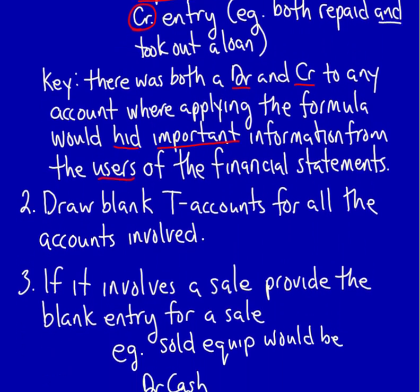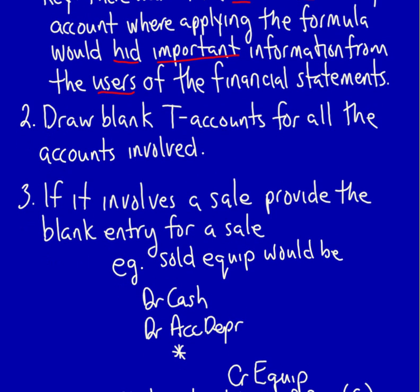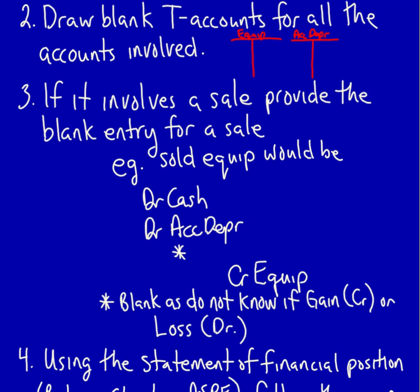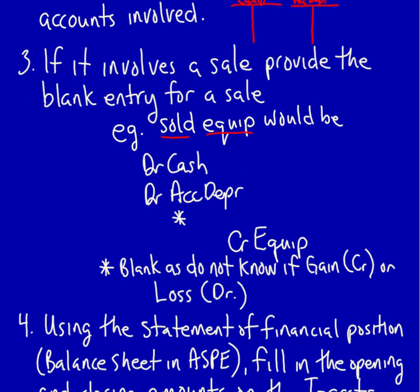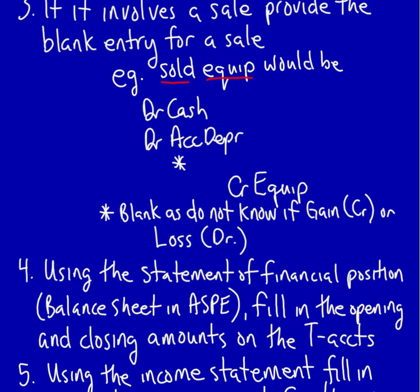So how do we do the T-account proof? First, we draw blank T-accounts for any relevant accounts. If it was equipment, put a T-account for equipment and also one for the related accumulated depreciation. Next, if it involves a sale, provide the blank entry for the sale. For selling equipment: there'll be a debit to cash, a debit to accumulated depreciation, a credit to equipment, and a blank for either the gain on sale (a credit) or the loss on sale (a debit) — we won't know which until we do our research.